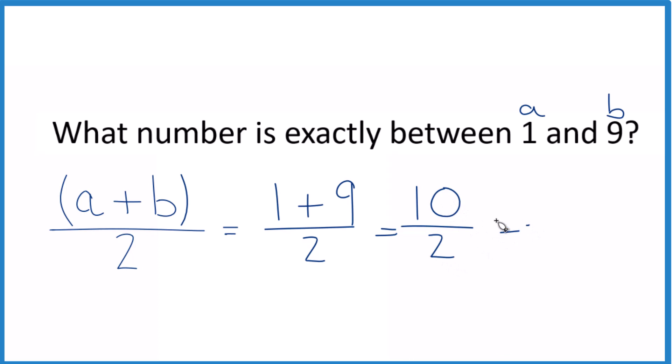And since two goes into ten five times, we can just say that's equal to five. So the number exactly between one and nine is five.